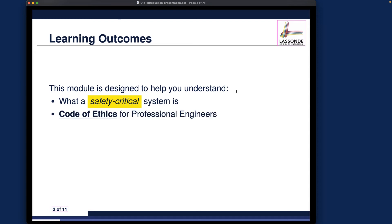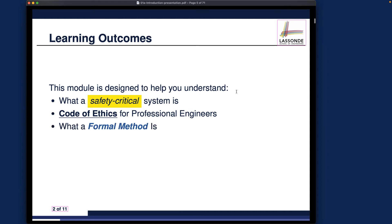I want to talk about the code of ethics for professional engineers. Every one of you who will graduate from your degree is going to be a software engineer, which is part of the professional engineering discipline. I'd like to remind you about the code of ethics you're supposed to obey and why this course is relevant to that. We'll also talk about what a formal method is — you may have heard the term often, but it has a simple definition that in practice requires lots of discipline and knowledge.